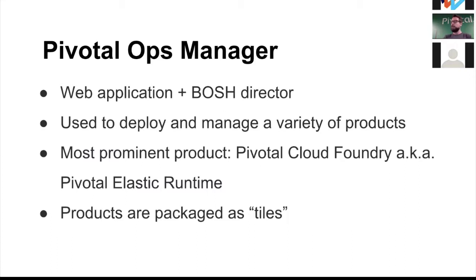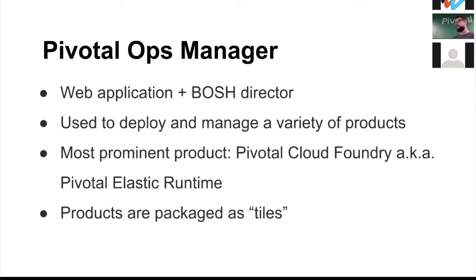If you install this image, you get the application and a BOSH director in the cloud of your choice. Right now we support GCP, Google Cloud Platform, AWS, Azure, and a couple others including vSphere. You can use it to deploy and manage a variety of products — the most important one is Pivotal Cloud Foundry, also referred to as Pivotal Elastic Runtime, which is a distribution of open source Cloud Foundry that offers HA, centralized logging, and more.